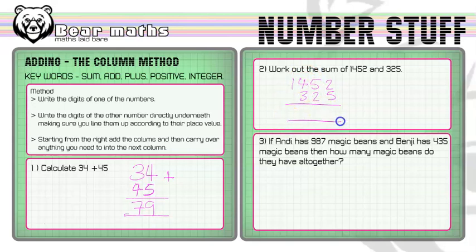Then all we have to do is add them. 2 plus 5 is 7, 5 plus 2 is 7, 4 plus 3 is also 7, and 1 plus nothing. I'll put a little zero - you can always do that. So 1 plus 0 is 1. The final answer is 1777.